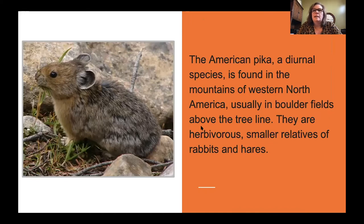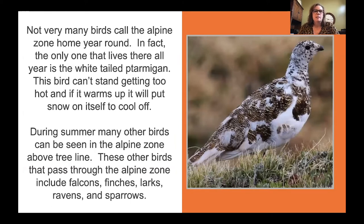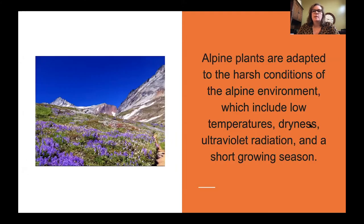The American pika is another species found in the mountains of western North America, usually in boulder fields above the tree line. They are herbivores and smaller relatives of rabbits and hares. The only bird that lives in the alpine zone year-round is the white-tailed ptarmigan — this bird can't stand getting too hot and will put snow on itself to cool off. During summer, other birds including falcons, finches, larks, ravens, and sparrows can be seen in the alpine zone. Alpine plants are adapted to conditions including low temperatures, dryness, ultraviolet radiation, and a short growing season.